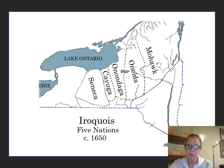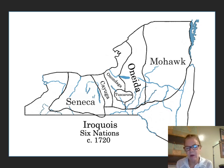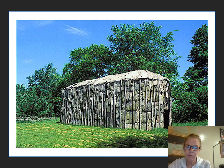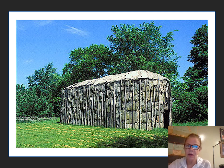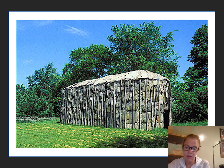This was going to change — by 1720 you get the Tuscarora joining them, coming up from the Carolinas. They lived in longhouses and had mostly permanent settlements, unlike the people out on the Great Plains or even the Anasazi who moved around because of the terrain and climate. These were more permanent.